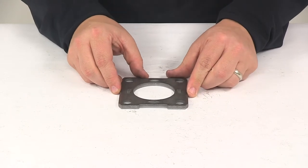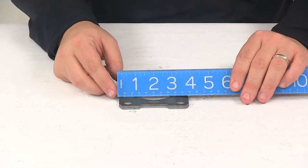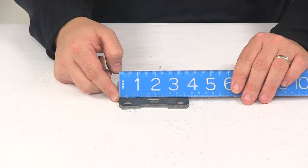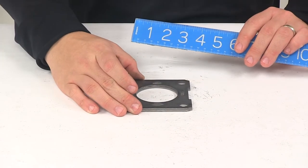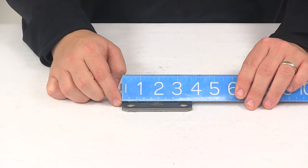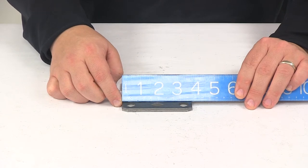Overall measurements going edge to edge in this direction: 3 and 3/4 inches. Again, it's a square design, so it measures the same going this direction, 3 and 3/4 inches.